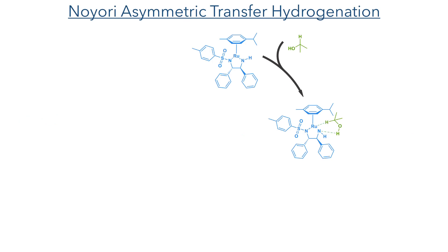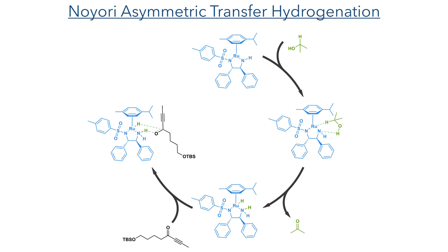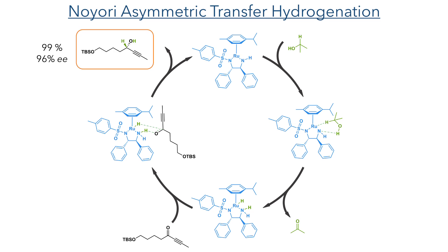Taking this compound forward, it was then subjected to a Noyori asymmetric transfer hydrogenation. This uses a ruthenium complex with a chiral DPEN ligand. This first coordinates to IPA, abstracting two hydrogen atoms and oxidising it to form acetone. This species then coordinates to the substrate, transferring the two hydrogen atoms to the aldehyde to form the target alcohol in a 99% yield with a 96% ee.